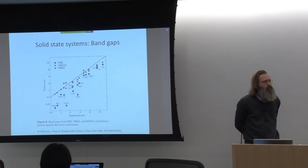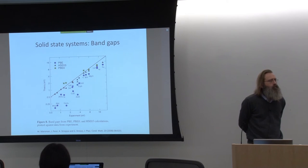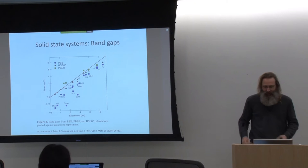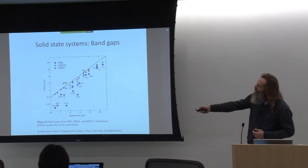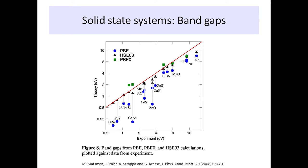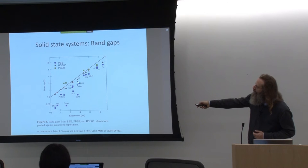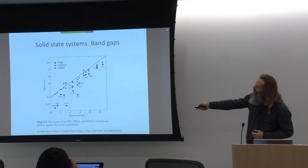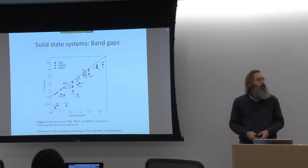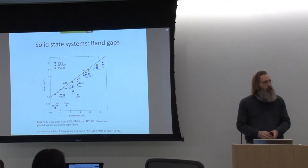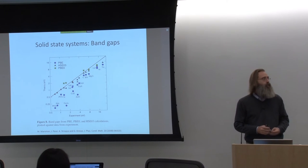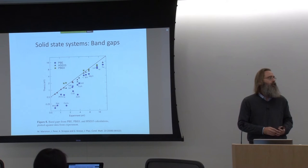Is it always true that hybrid functionals give the correct band gap for a small gap system? No. For instance, gallium arsenide is still quite a bit away, and zinc oxide as well. But it tends to do quite well for small and medium-sized gap systems. And how sensitive are these calculations with regard to pseudopotentials? They shouldn't be more sensitive to this than DFT is.